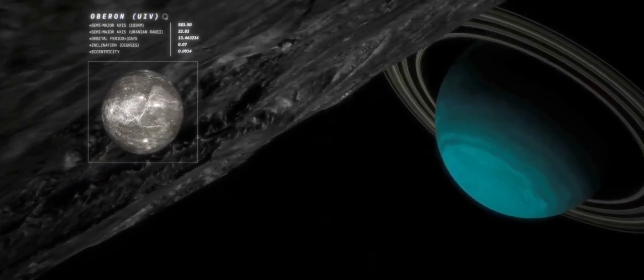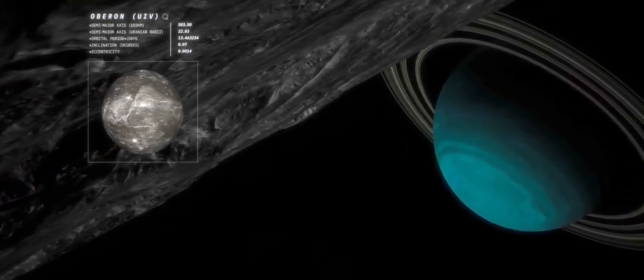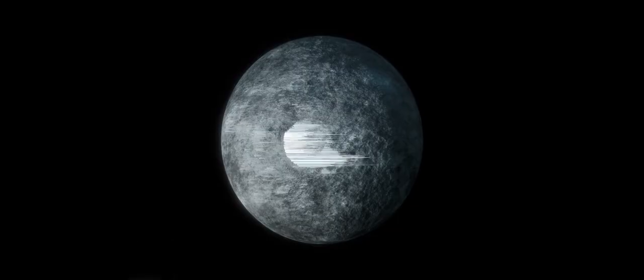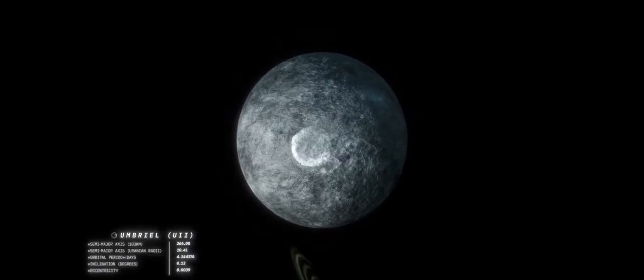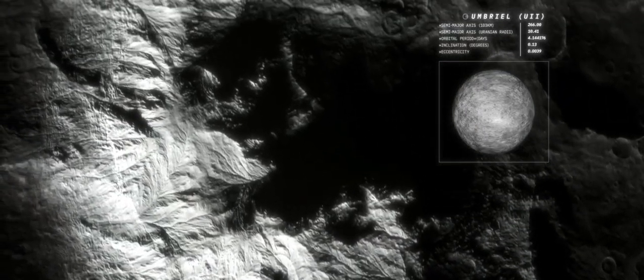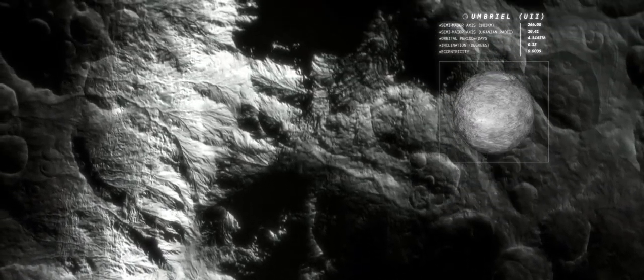Oberon is also covered with craters and has valleys and large mountains. Umbriel's surface is the darkest of the Uranian moons, and it sports a strange polar ring. The origin of this ring is still a mystery, but scientists believe that it may have been formed by an icy impact.